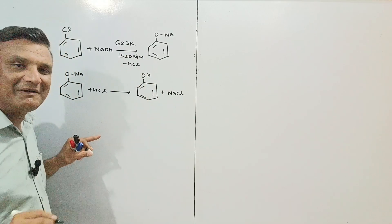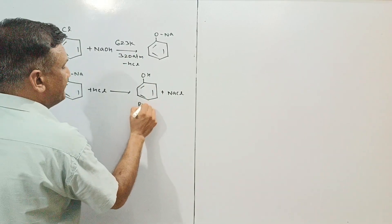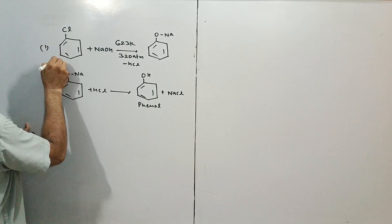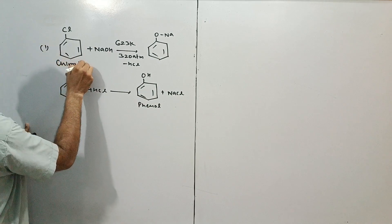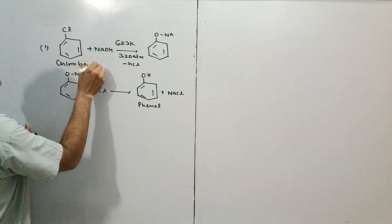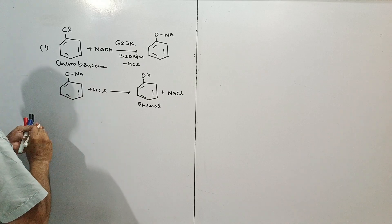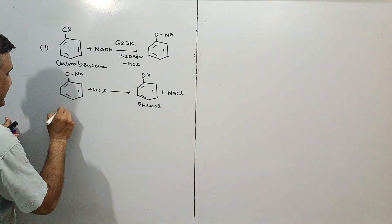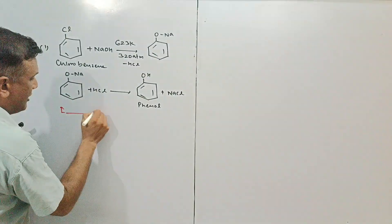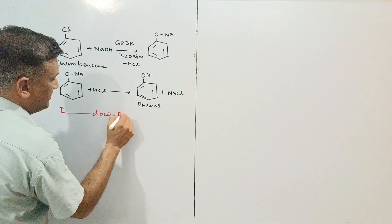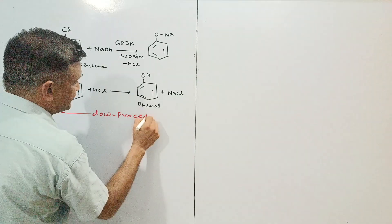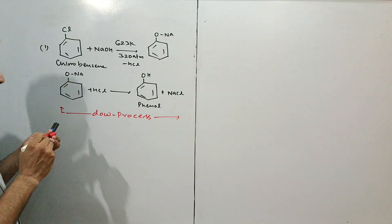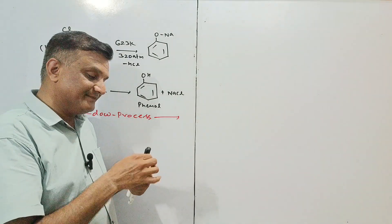Bahut jagah temperature aur pressure ki requirement hogi, tab jakar yahan par phenol banega. Yeh tha aapke paas chlorobenzene ke regarding. Aur us position mein, yeh ek naming reaction ke roop mein count hoti hai, jise hum kehte hain Dow Process. Lekin agar hum iski reactivity badhana chahte hain particular taur par, to hum yeh keh sakte hain: